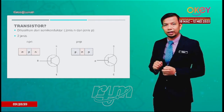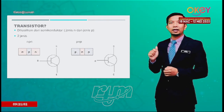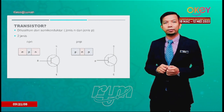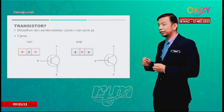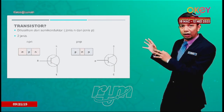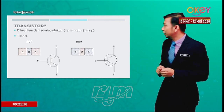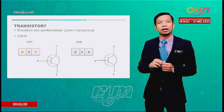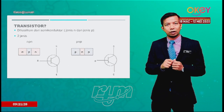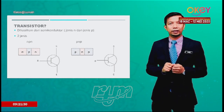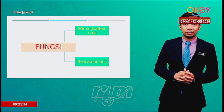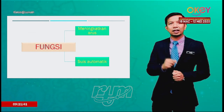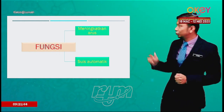Transistor mempunyai tiga terminal, iaitu tapak, pengumpul dan pengeluar. Transistor dihasilkan daripada gabungan dua jenis bahan semikonduktor, iaitu semikonduktor jenis N dan semikonduktor jenis P. Perbezaan antara transistor NPN dengan transistor PNP ialah jika NPN, arus keluar melalui terminal pengeluar, tetapi jika PNP, sebaliknya. Dua fungsi utama transistor adalah sebagai penguat arus dan sebagai suis automatik.